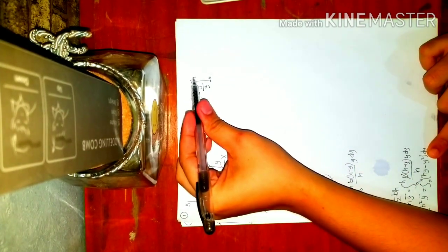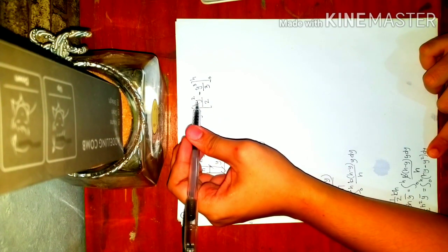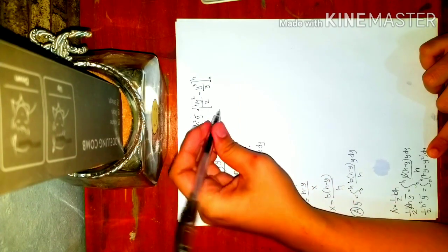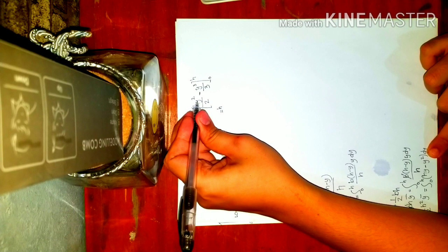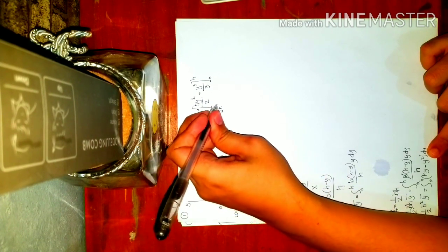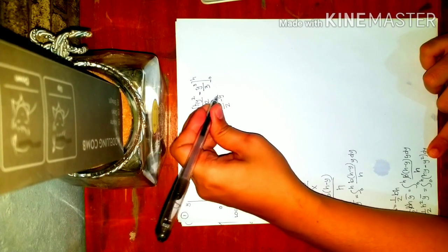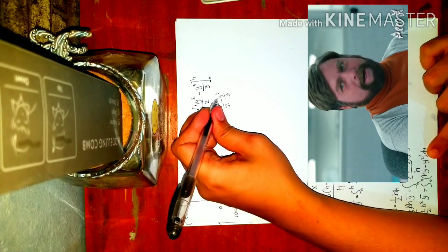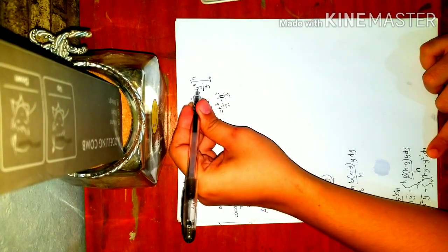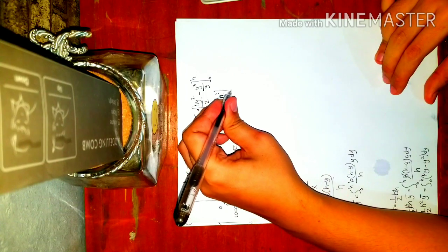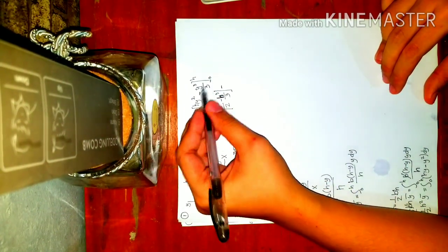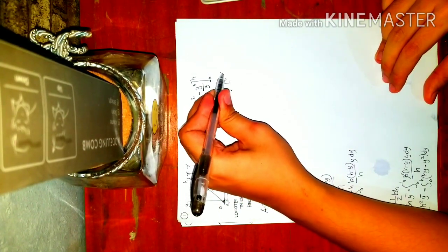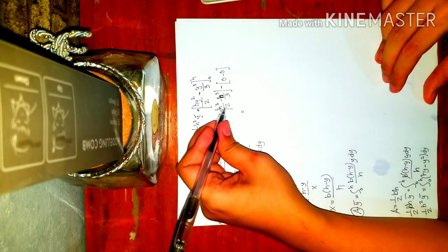Substitute the value of h for y: that will be h cubed over 2 minus h cubed over 3, minus the lower limit. When you substitute 0 for y, that will be 0. So we have h cubed over 2 minus h cubed over 3.